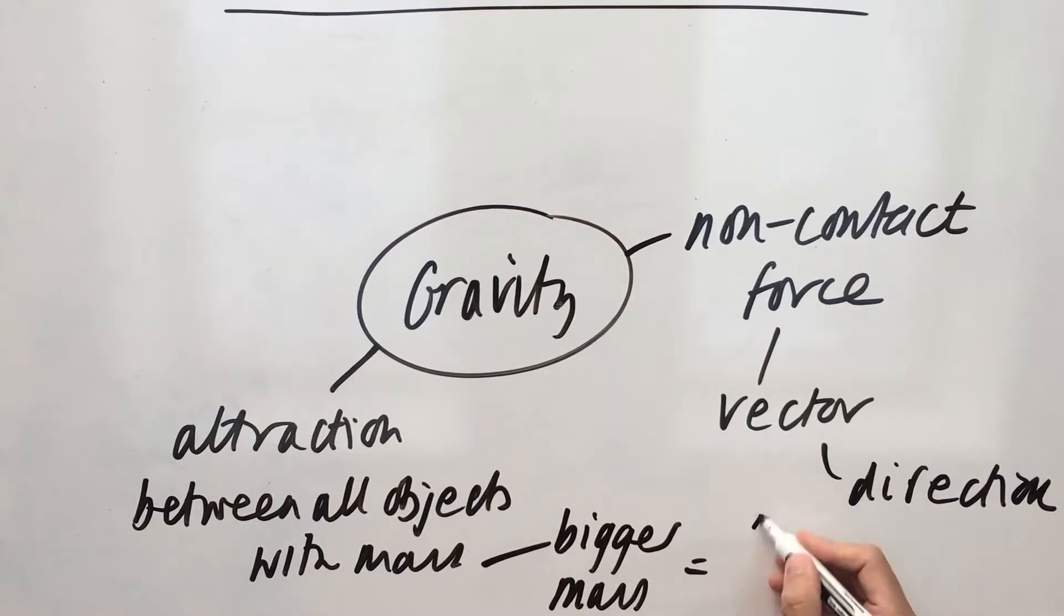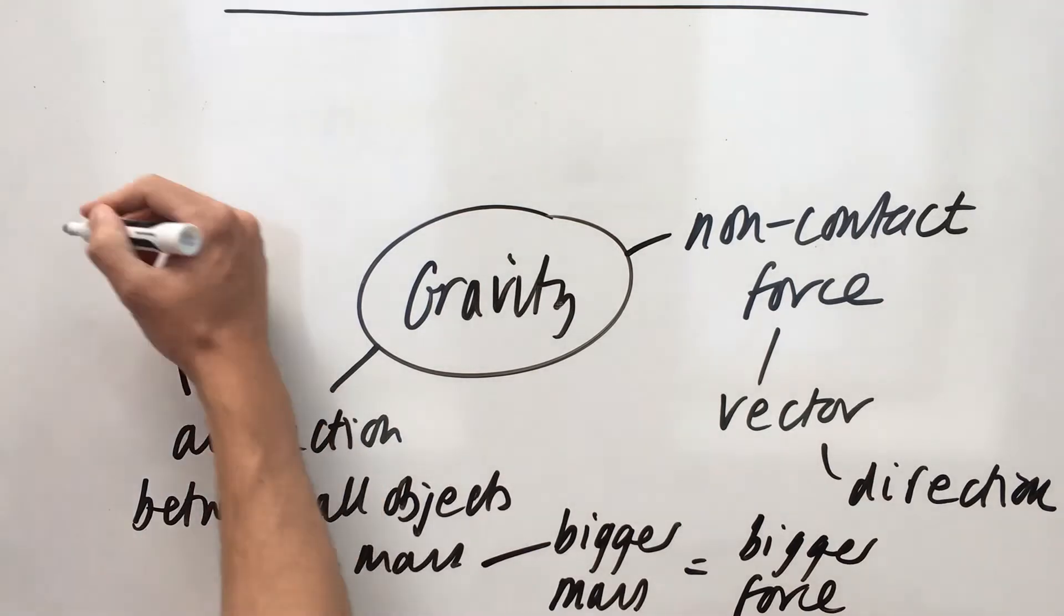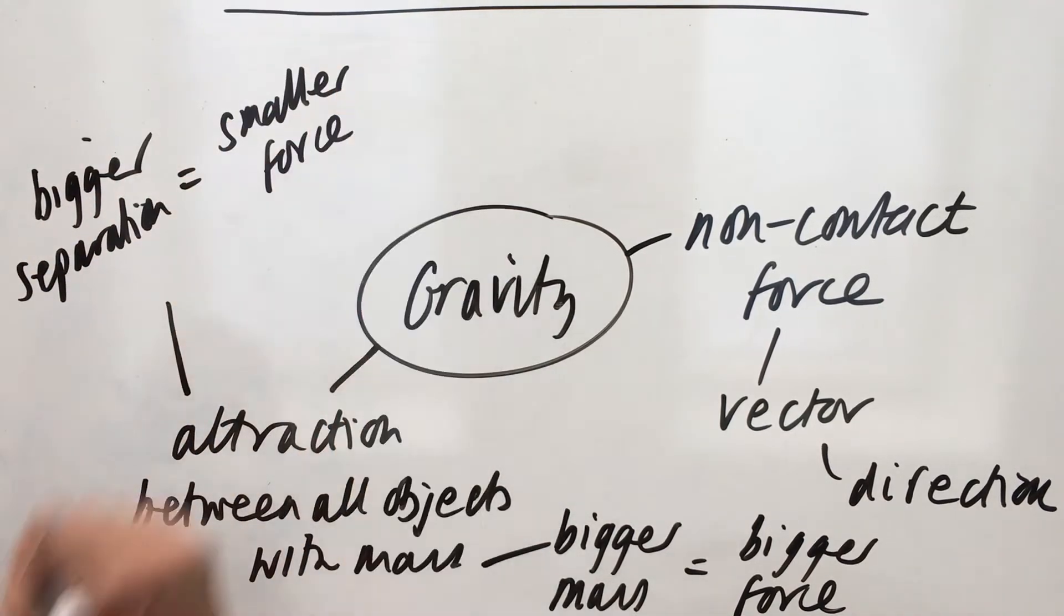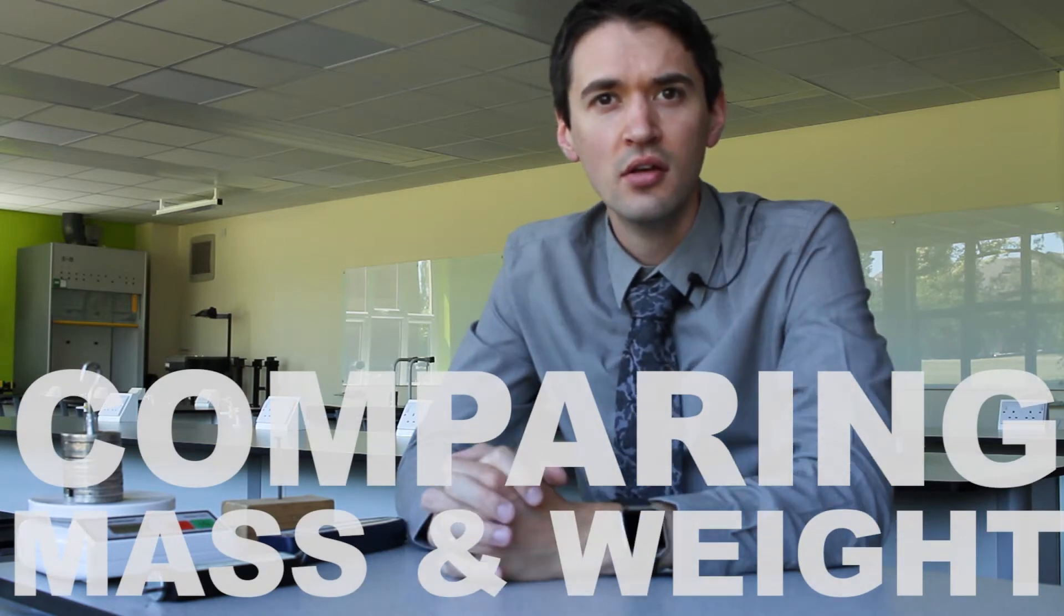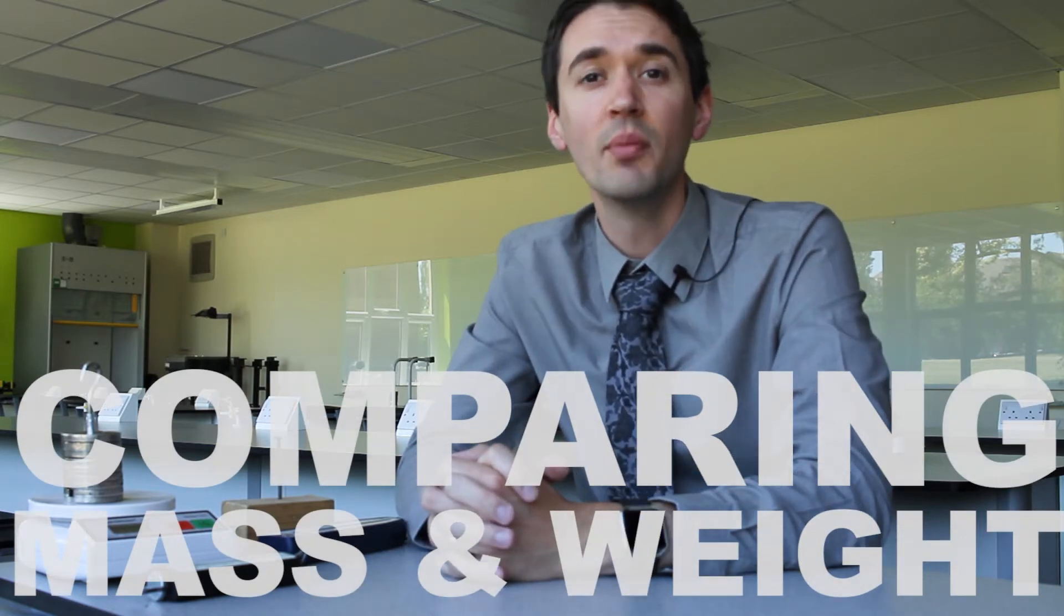Now the bigger the mass, the bigger the force of gravity between them, but the further apart they are, the weaker that force is. Comparing mass and weight is easier. We basically just stick them in a table, and we look at mass and weight separately, and compare them for each different property.